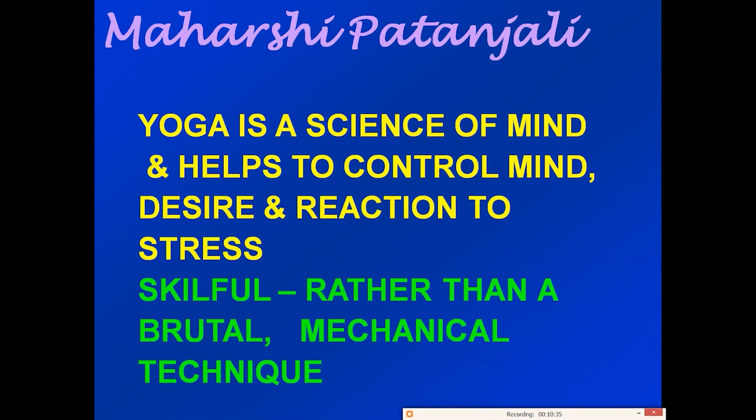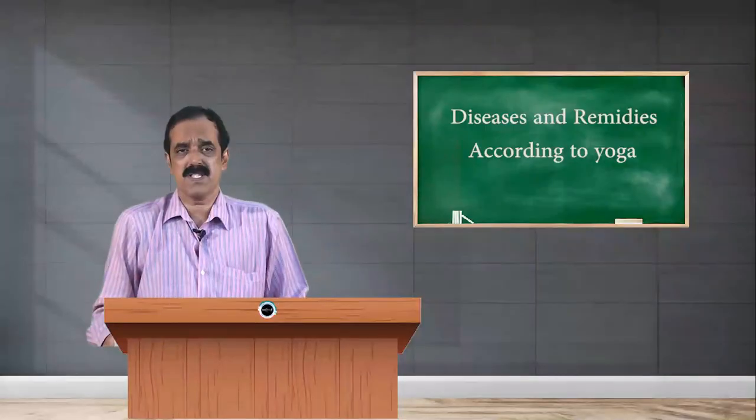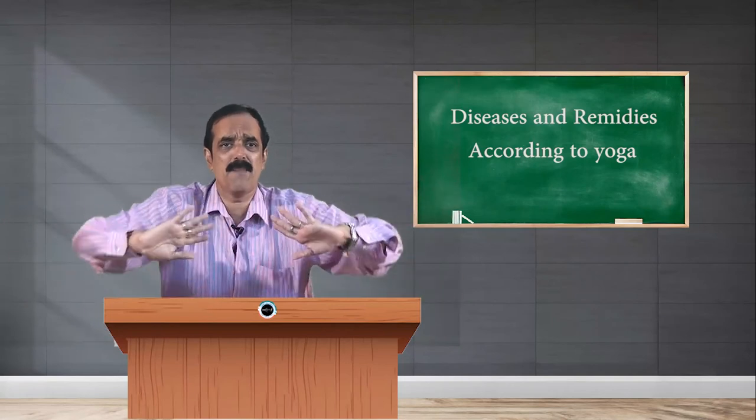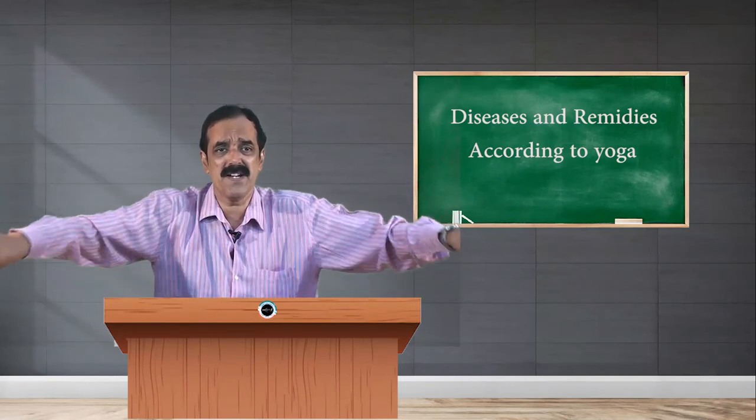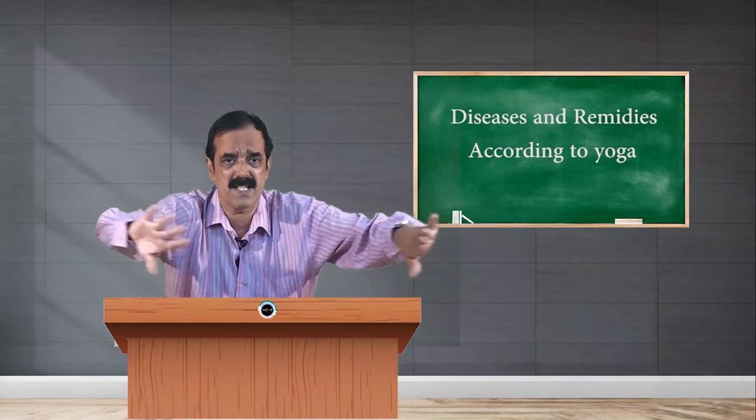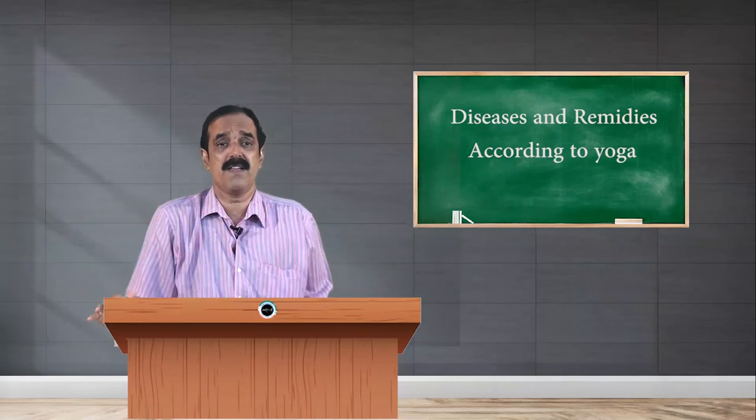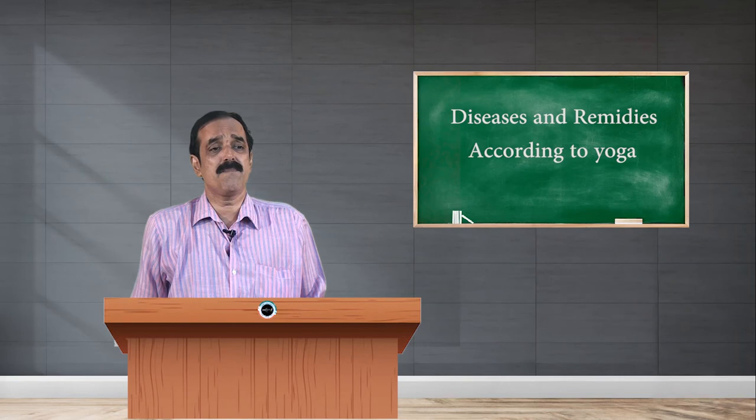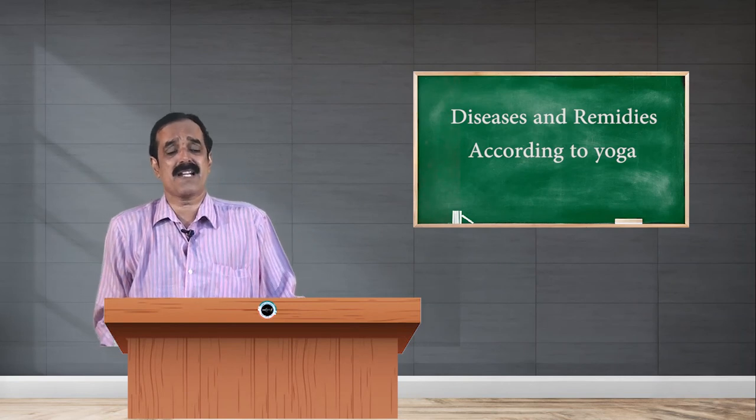Yama and niyama are explained, then physical practice asana, then pranayama. This is the way, then comes pratyahara, dharana, dhyana, and higher states with vritti nirodha state. In this way, yoga is a skillful, systematic way, not a brutal or mechanical technique. When you bend your body, you bend your mind, you bend your intellectual personality, and reach to spiritual personality.